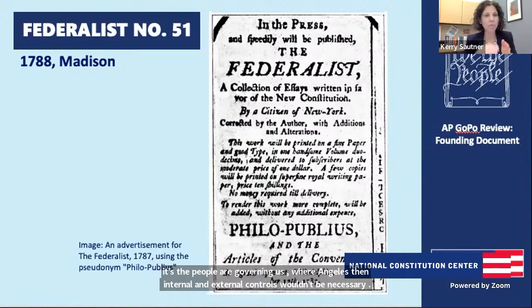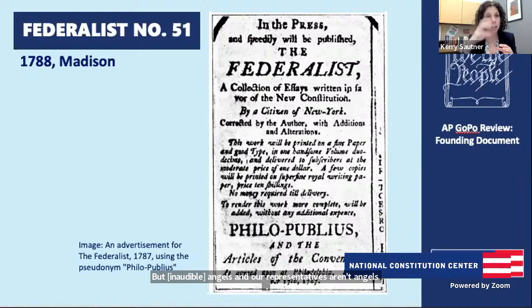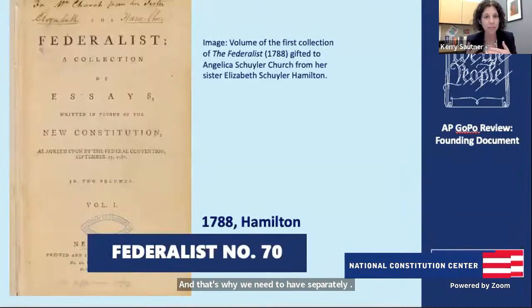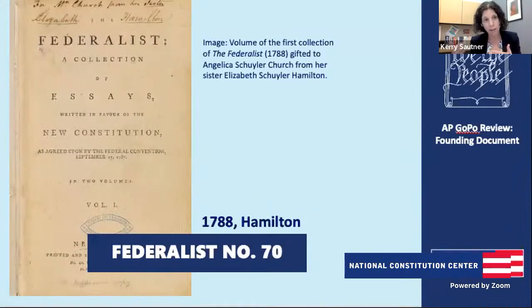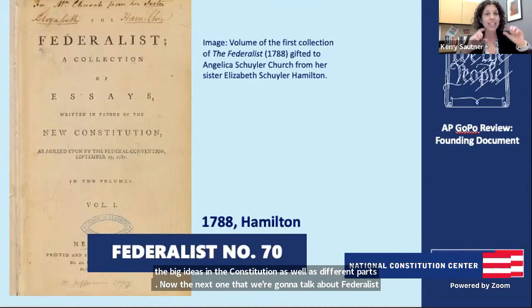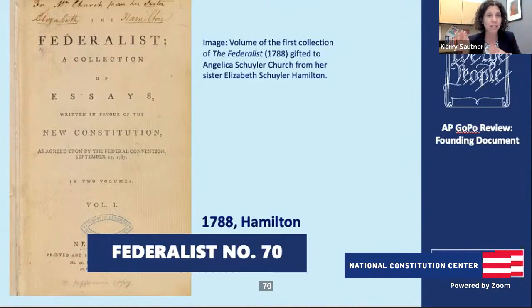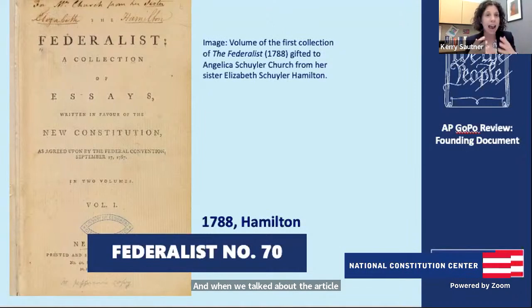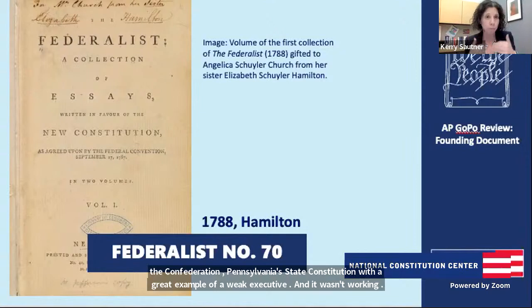All these Federalist Papers are trying to show the big ideas in the Constitution. The next one, Federalist 70, talks about the need for a strong executive. When we talked about the Articles of Confederation, Pennsylvania's state constitution was a great example of a weak executive that wasn't working. They learned their lessons and changed it in the Constitution. Federalist 70 explains why the executive needs to be strong and have power, as well as limits.